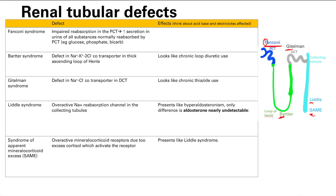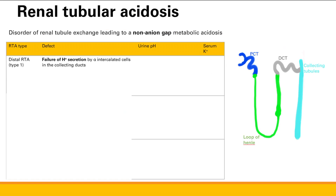These two — Liddle and SAME — are very similar with just slight variations. One is overactivity of the channel itself; the other is overactivity of the receptor that activates the channel. There are also many different hereditary defects associated with these tubular defects — autosomal dominant and autosomal recessive. These have been omitted here as they're low yield; consult First Aid if you need to memorize them.